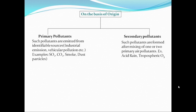So secondary air pollutants are formed by the combination of more than one primary air pollutant. The example of secondary air pollutants could be acid rain, which is formed by the combination of oxides of sulfur, carbon, and nitrogen with water vapors in the atmosphere. Another example could be tropospheric ozone, which is formed by the combination of carbon monoxide and oxides of nitrogen. So these are examples of secondary air pollutants.